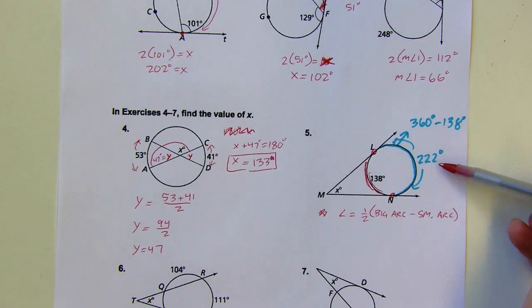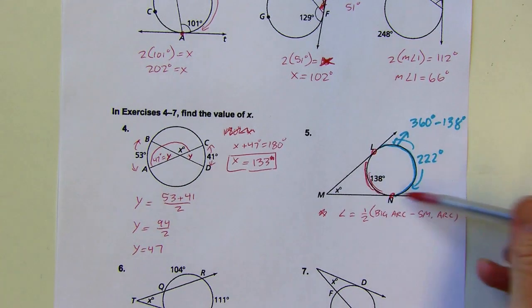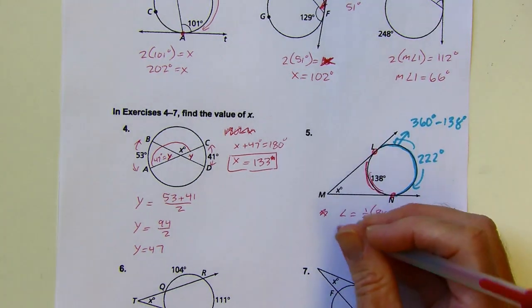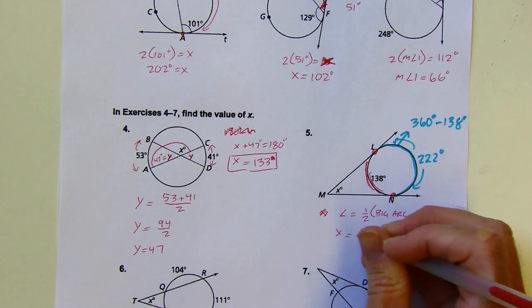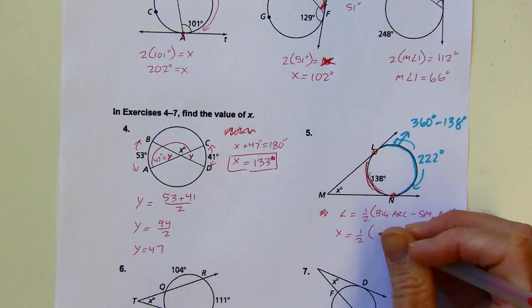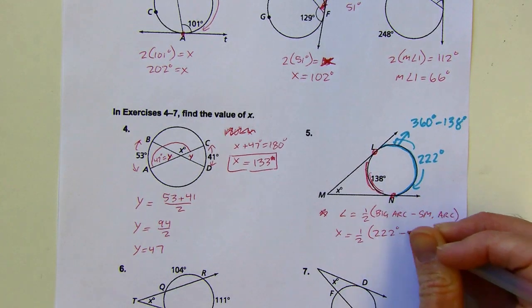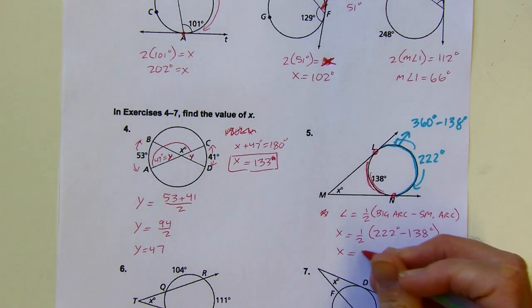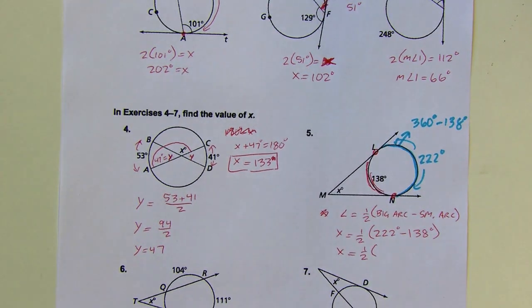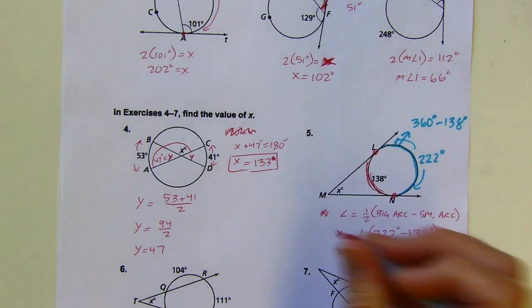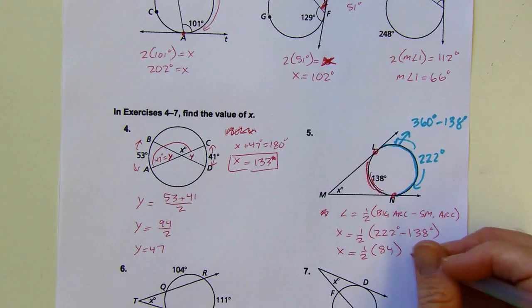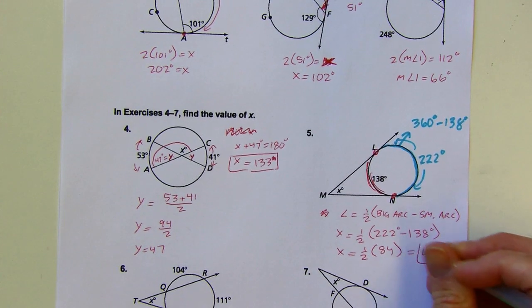Here it's easy to tell that the bigger one is the 222, but the bigger one is always going to be further away because the angle will be more opened up by the time you get to the outside. So my angle is X, my big arc is going to be 222, my small arc is 138. Then I'll do the subtraction, that's 84. Half of 84 would be 42.